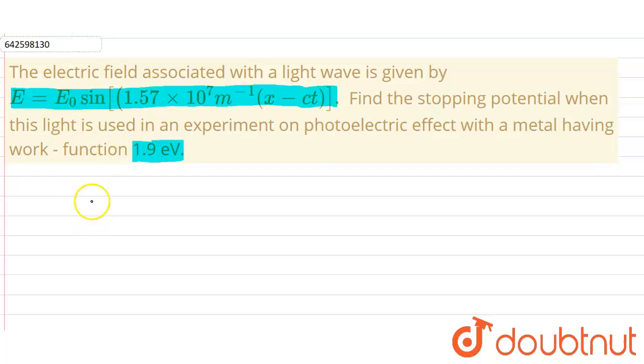Okay, so the equation for the electric field associated with the light wave E is given as E0 sin 1.57 into 10 raised to the power 7 into x minus ct.